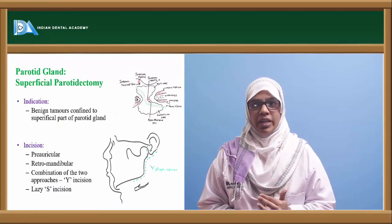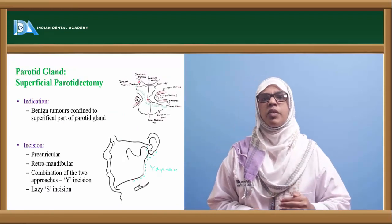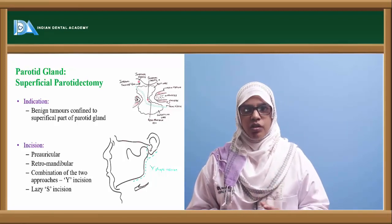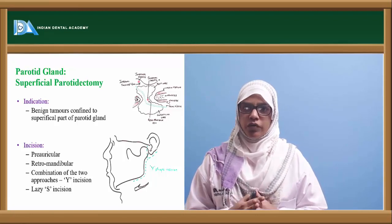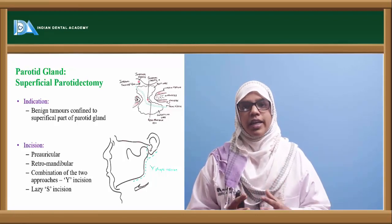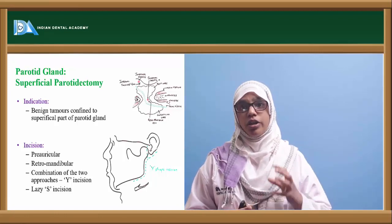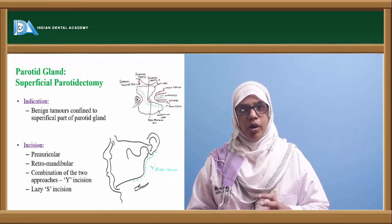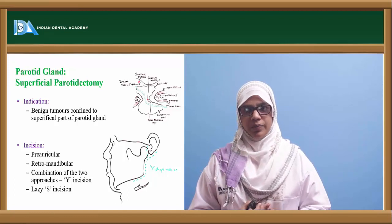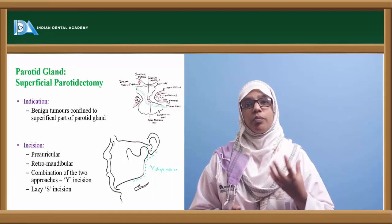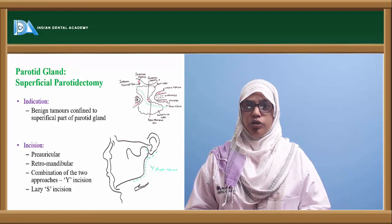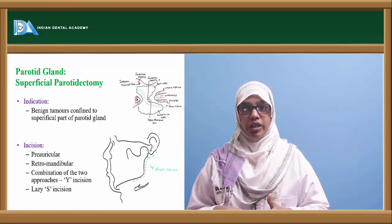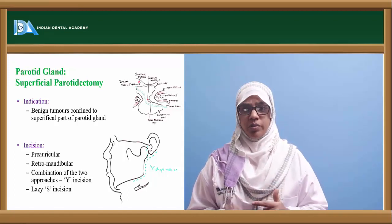Let's move on to surgical management. We begin with superficial parotidectomy. This is done for benign tumours confined to the superficial part of the parotid gland, or in case of large salivary calculi present at the hilum or glandular mass, wherein you remove the superficial part of the salivary gland keeping the deeper part intact. Various incision approaches are used: preauricular incision, retromandibular incision, or a combination of both in the form of a Y-shape incision or a lazy S-shape incision.